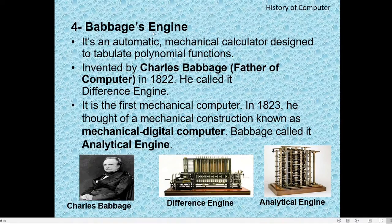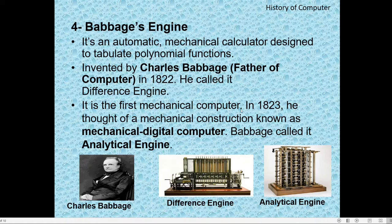The fourth device is Babbage's Engine. It is an automatic mechanical calculator designed to tabulate polynomial functions, which are used in mathematics. It was invented by Charles Babbage, who is known as the father of the computer. This engine was invented in 1822, and he called it the Difference Engine — it is the first mechanical computer. In 1823, he thought of a mechanical construction known as the mechanical digital computer, which Babbage called the Analytical Engine.